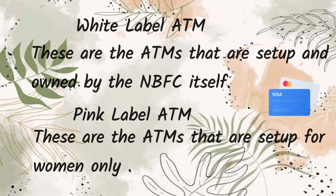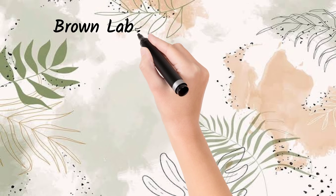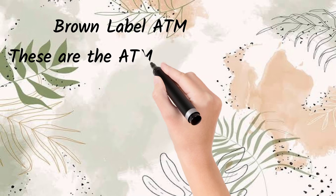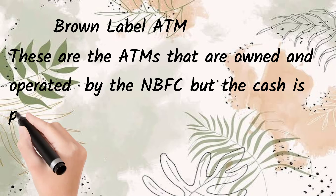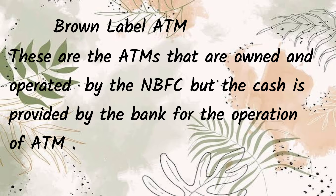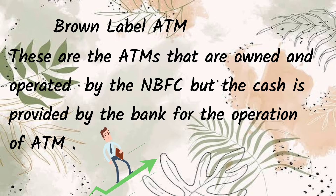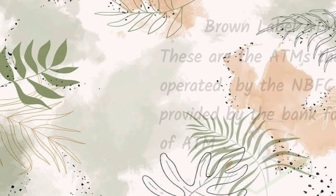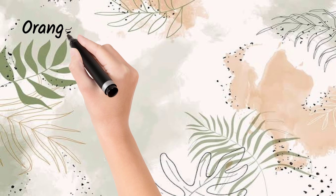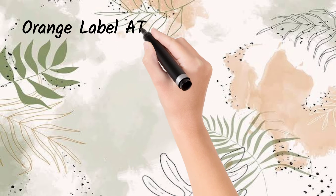Then we have brown label ATMs. These are the ATMs that are owned and operated by an NBFC, but the cash is provided by the bank for the operation of the ATM. So the ATM is owned and operated by the NBFC, but the cash is supplied by the bank.